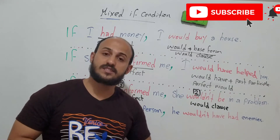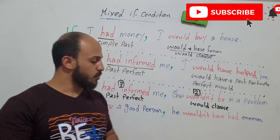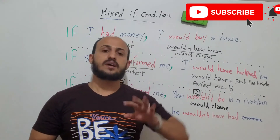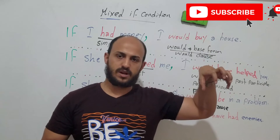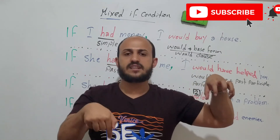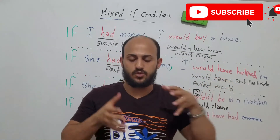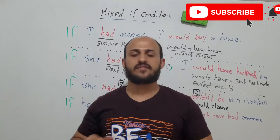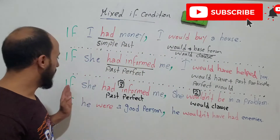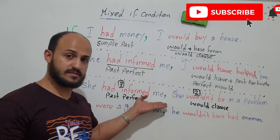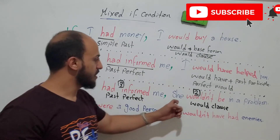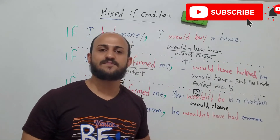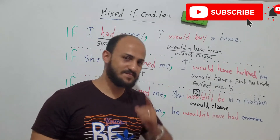When do I use it? When something happened in the past and the result is still present now — you have the consequence here in the present. So: 'If she had informed me' — this is the past. 'She wouldn't be in a problem' — now she is in a problem. That's it.